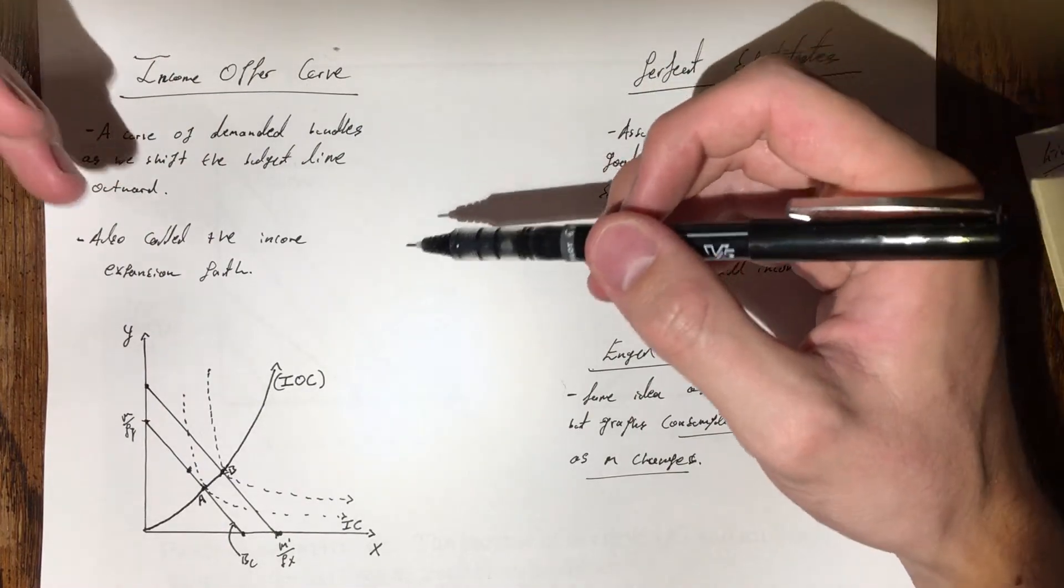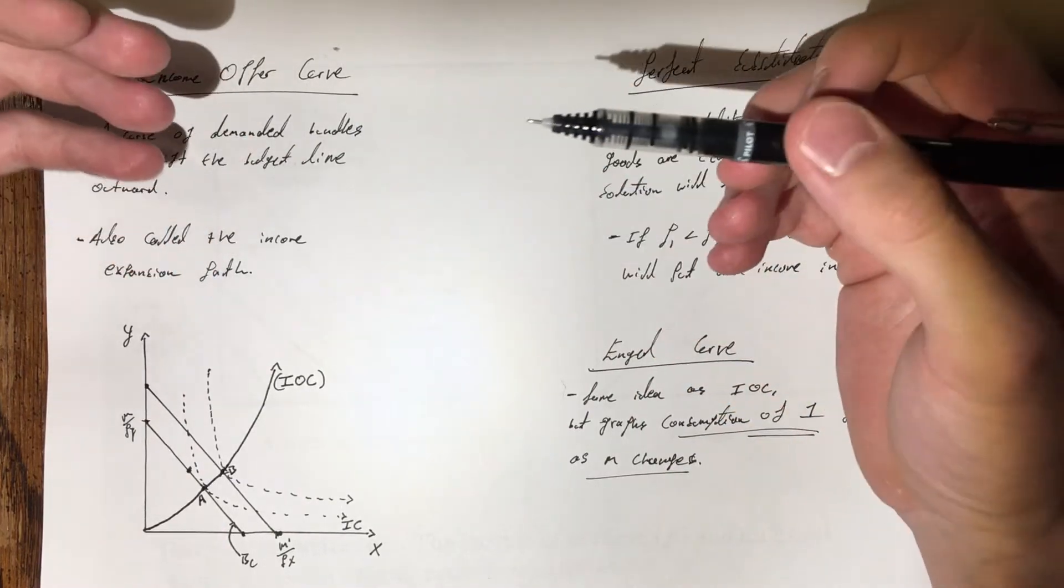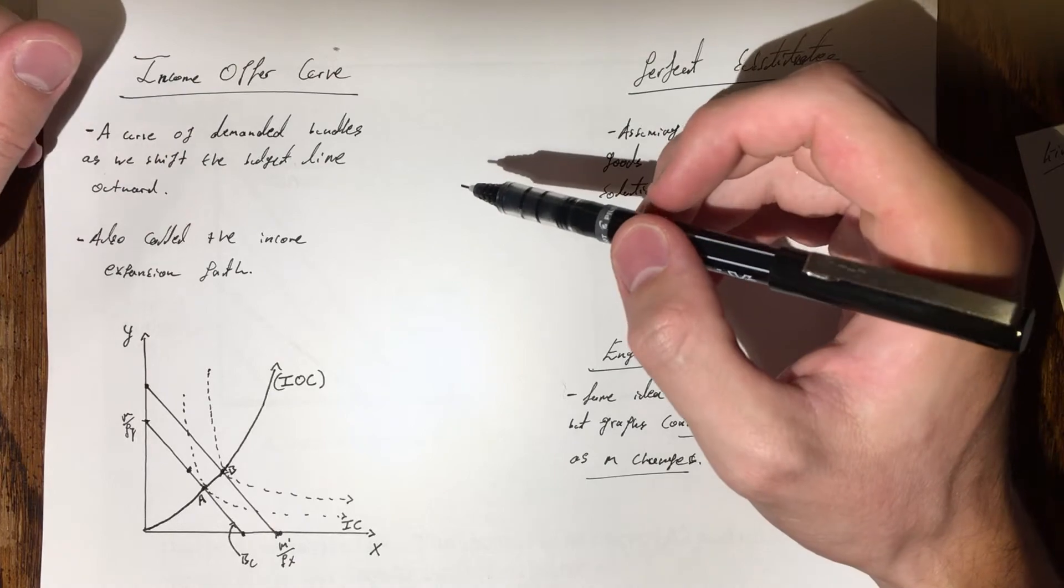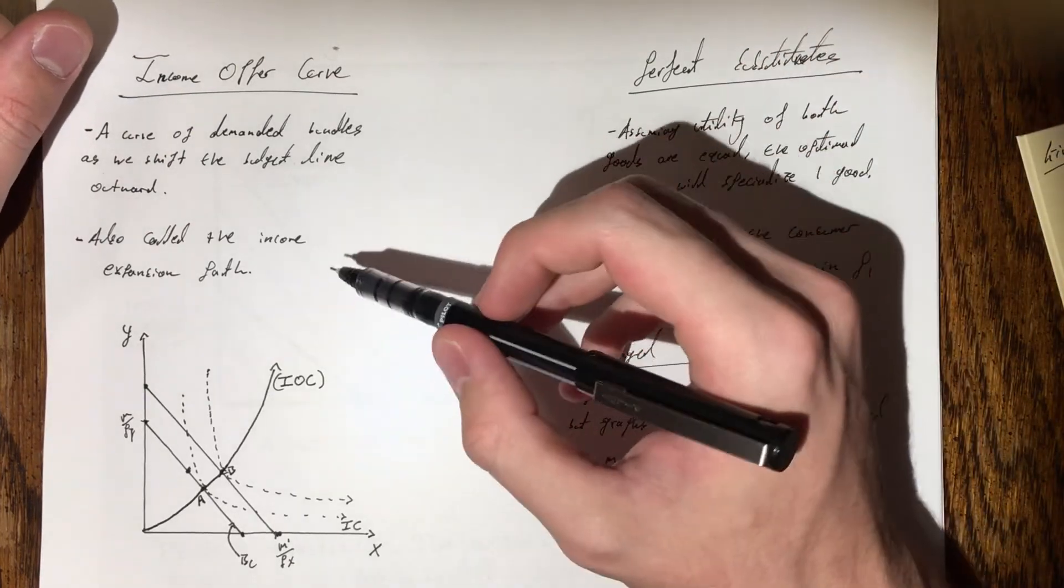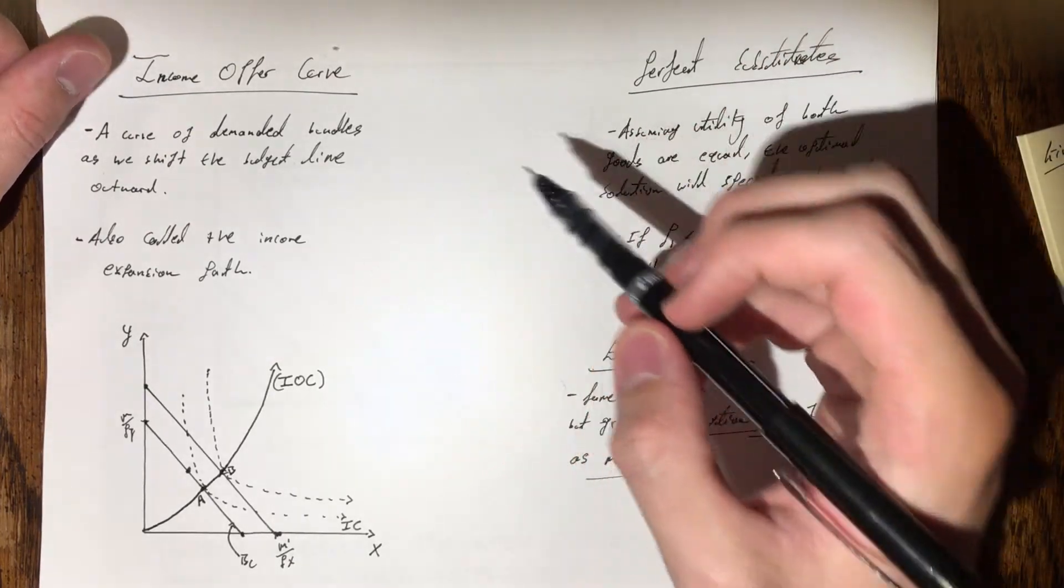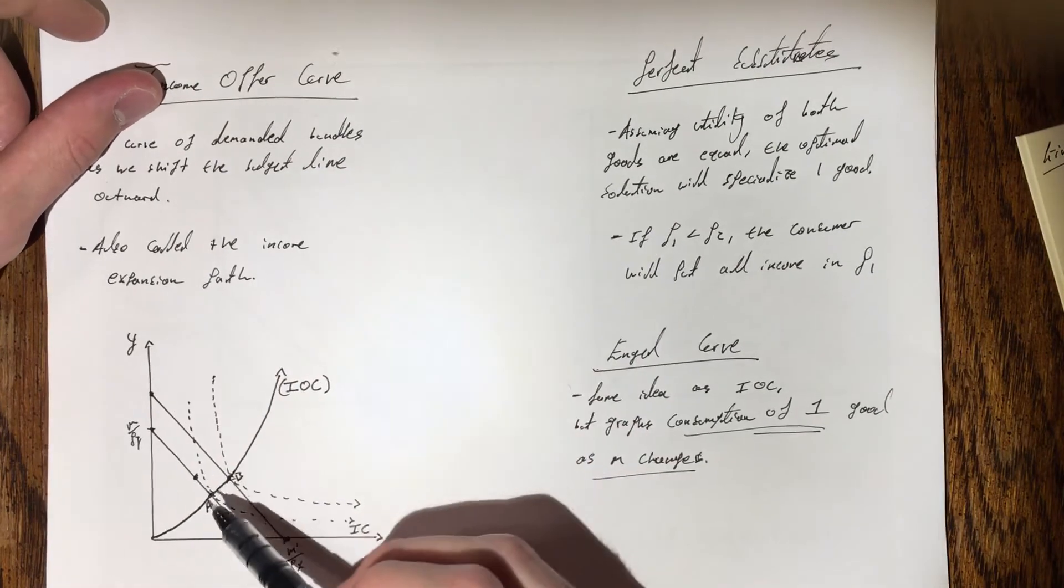So as we shift the budget line but still hold relative prices constant. This is also called the income expansion path.